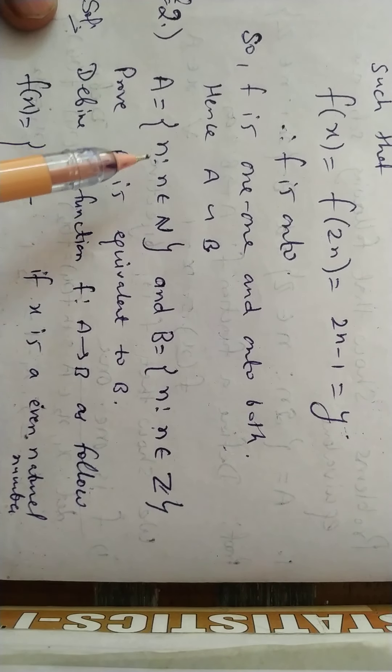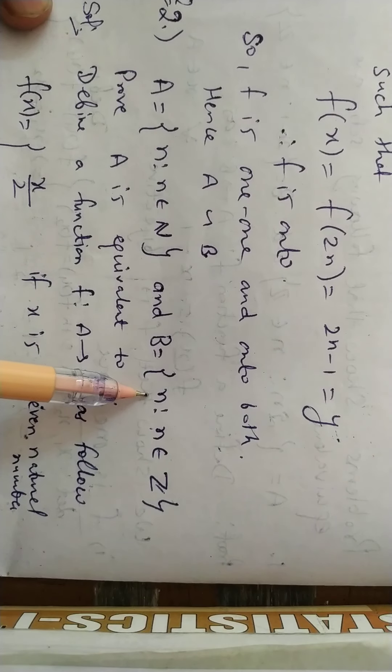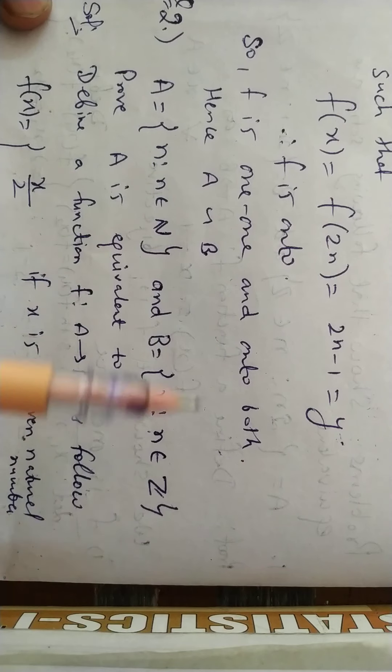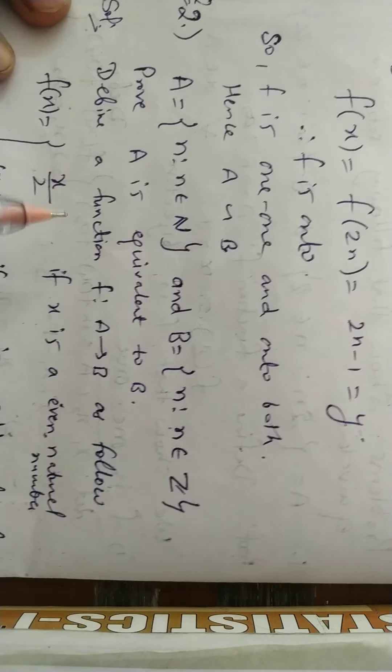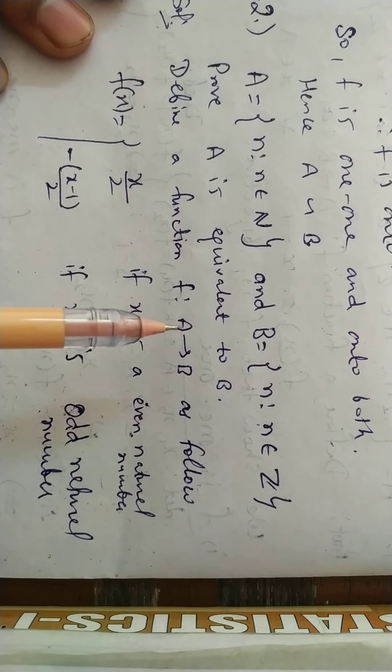Second example: There is a set A which contains natural numbers, and set B which contains integers. This is the set of natural numbers, and this is the set of integers. We have to show there is equivalence between them. This is a very important question. You have to carefully choose the function and remember it.